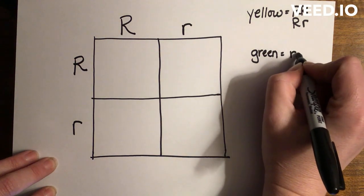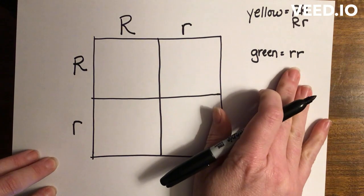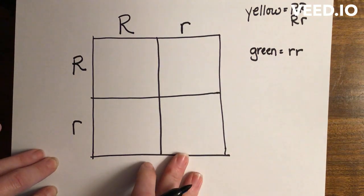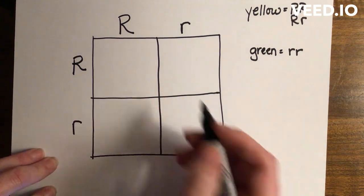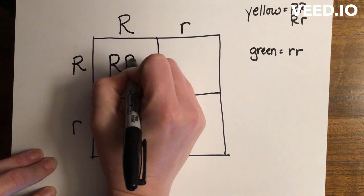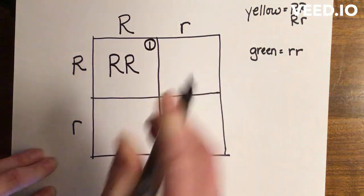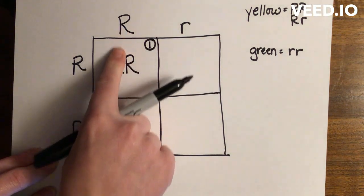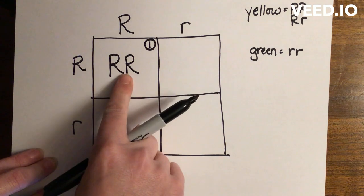Now, filling in the center, in box number one I bring this capital letter down and this capital letter over. In box number two, I bring this capital letter over and this lowercase letter down.